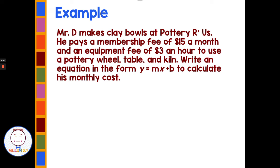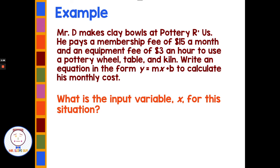Let's look in depth at a word problem. Mr. D makes clay bowls at Potteries RS. He pays a membership fee of $15 a month and an equipment fee of $3 an hour to use a pottery wheel, table, and kiln. Write an equation in the form y equals mx plus b to calculate his monthly cost. If we think about this equation, what is the input variable, or x, for this situation? What are we going to be putting into this equation to get information out?